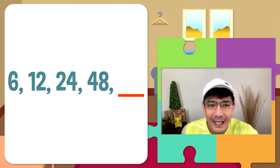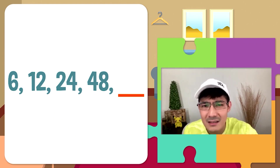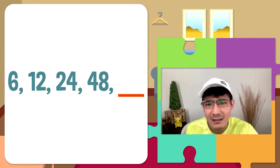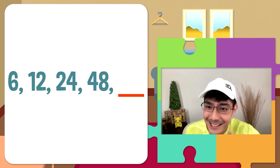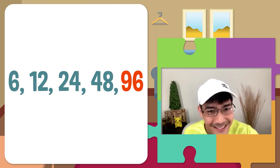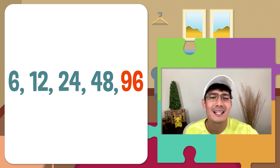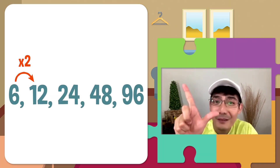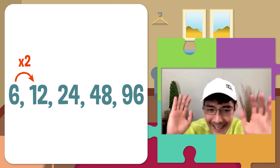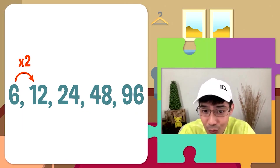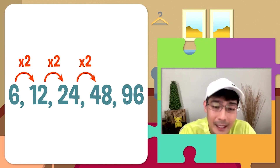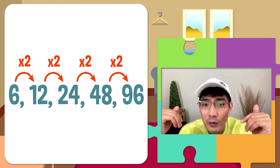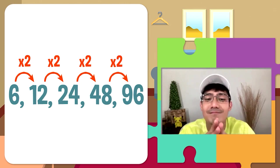Anong kaya yung next term at pattern na hinahanap natin? From 6, naging 12. Tapos naging 24. Tapos 48. Ang last term natin ay 96. Pero bakit nga 96? And for this sequence, ang pattern ay nagmultiply tayo ng 2. Kaya 6 times 2 is 12, 12 times 2 is 24, 24 times 2 is 48, at 48 times 2 is 96.